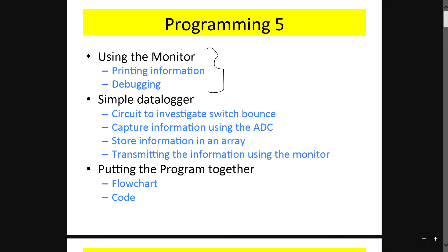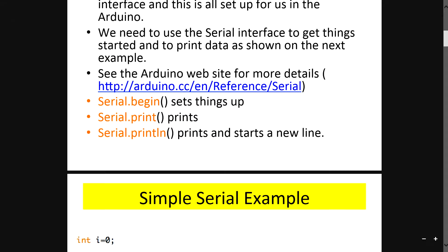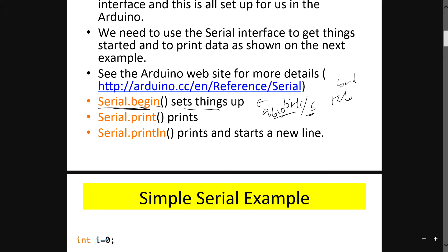In this PDF we'll cover the debugging issues. The serial monitor uses serial.begin to set things up — specifically to set the bit rate, or baud rate, in bits per second. Normally we write it as 9600 bits per second, but you can write inside the bracket as 9600 or any value that is 300 times 2 to the power of n.